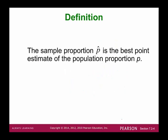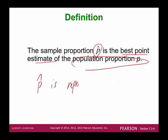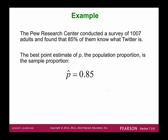The sample proportion p-hat is the best point estimate of the population proportion. The Pew Research Center conducted a survey of 1,007 adults and found that 85% of them know what Twitter is, and 15% of them do not know Twitter.